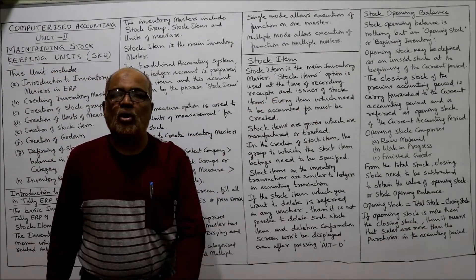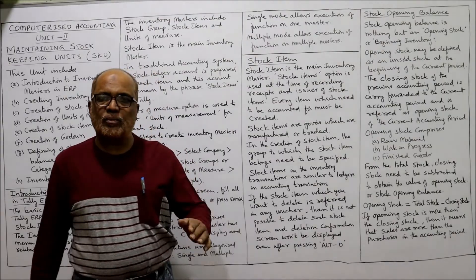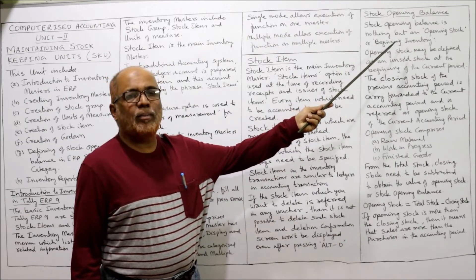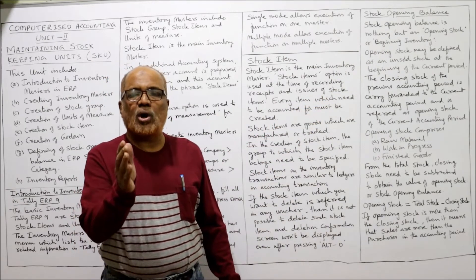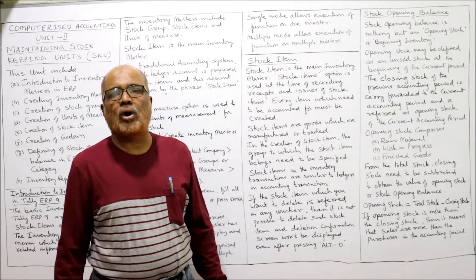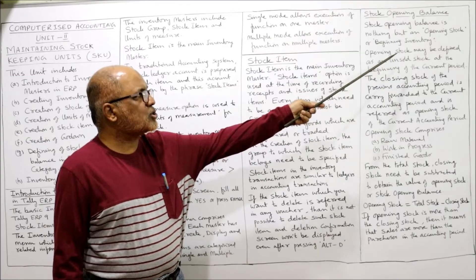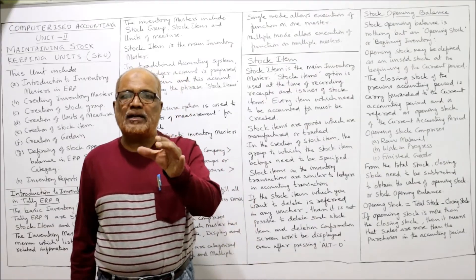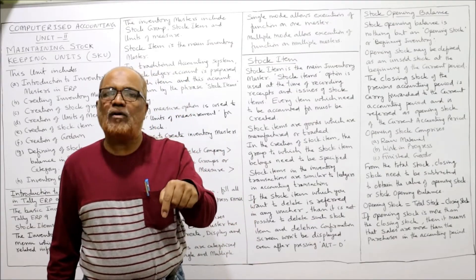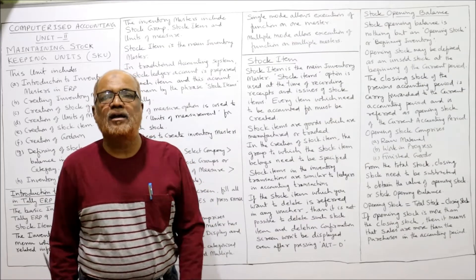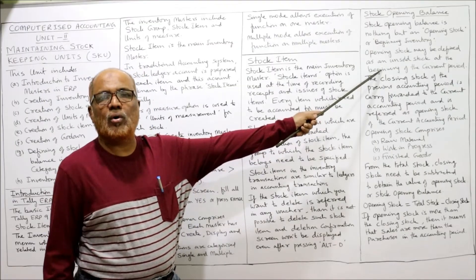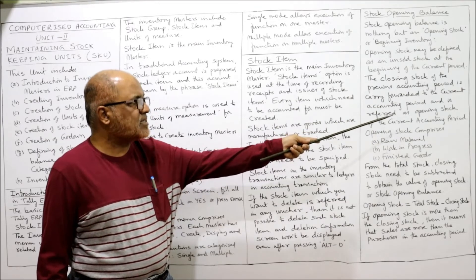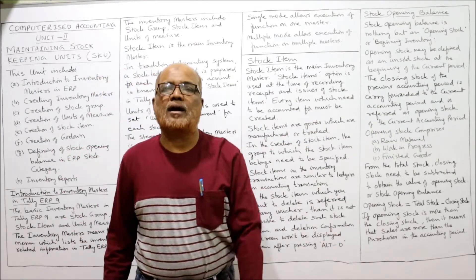The last topic is stock opening balance — this question has also been asked in previous examinations. Stock opening balance is nothing but the opening stock or beginning inventory. The stock at the beginning of the period is called stock opening balance. Opening stock may be defined as the unsold stock at the beginning of the current period. The closing stock of the previous period is carried forward to the current accounting period and is referred to as the opening stock of the current accounting period.